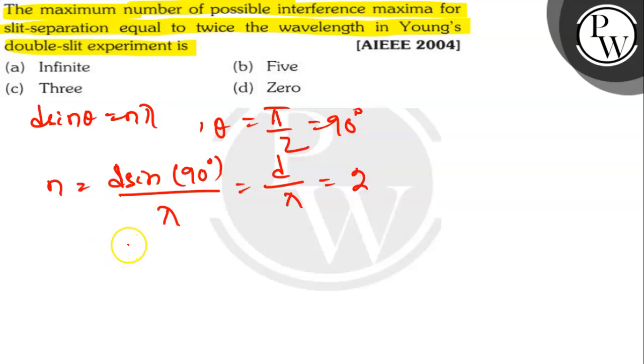We have 2 maxima on the screen on either side of the central maxima. Thus, the maximum number of possible maxima observed are 2 plus 1 plus 2. So it will be 5. So option b is the correct answer.